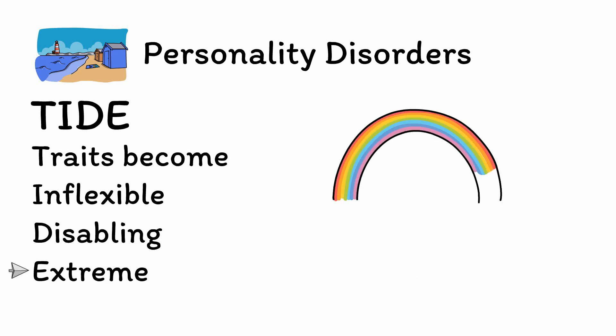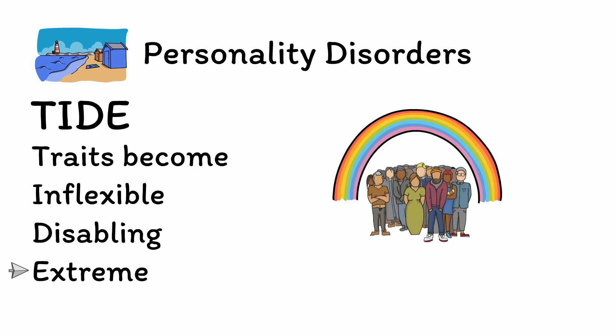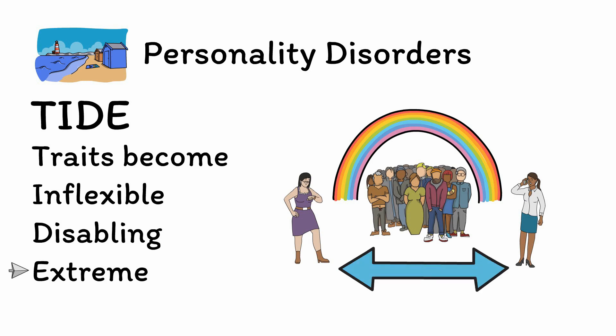Finally, the E is for extreme. We established earlier that personality traits exist on a spectrum, with most people being somewhere in the middle. In contrast, people with personality disorders tend to live at the extremes, with either incredibly high or incredibly low scores on measures of openness, conscientiousness, extroversion, agreeableness, and neuroticism. The extreme nature of these traits makes it hard for them to operate in situations that call for the other end of the spectrum, leading directly to the inflexibility and disability that we've talked about already.